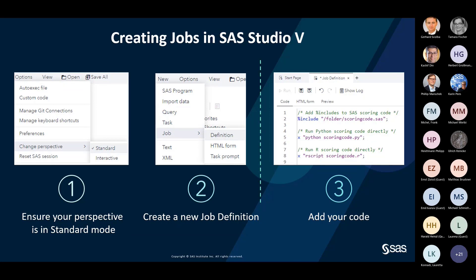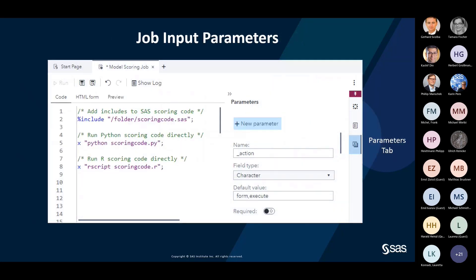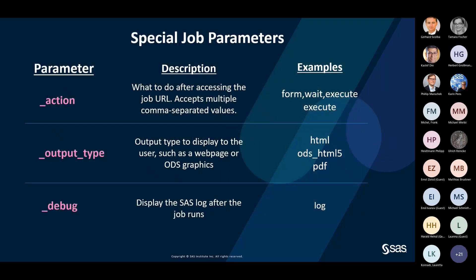You can also directly code inside the code box. Once the code is created, you can add parameters — these are macro variables used to modify the job. Some special job parameters include: underscore action, which tells the job URL what to do after accessing it and can accept multiple comma-separated values; and output type, which specifies what type of graphics to display, such as a web page or ODS graphics.